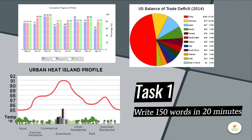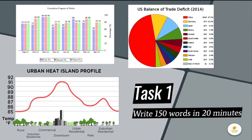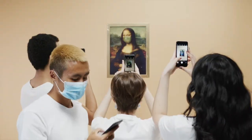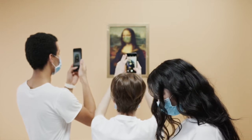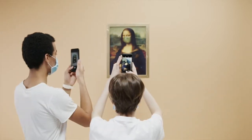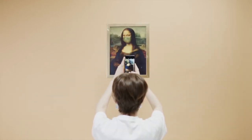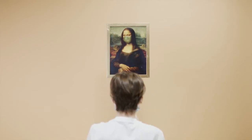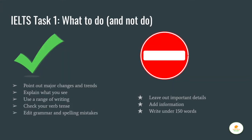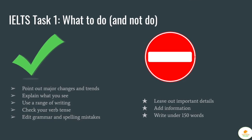Then you look at task one. Task one in IELTS presents some sort of graph, picture, or chart, and you have to figure out what's going on. It's like going to a museum where no pictures are allowed — when you get home and your parents ask what you saw, you have to describe in words something you saw visually. In task one, you're simply describing the information that you see. You're not adding anything, not including extra information, and not inserting your opinion.